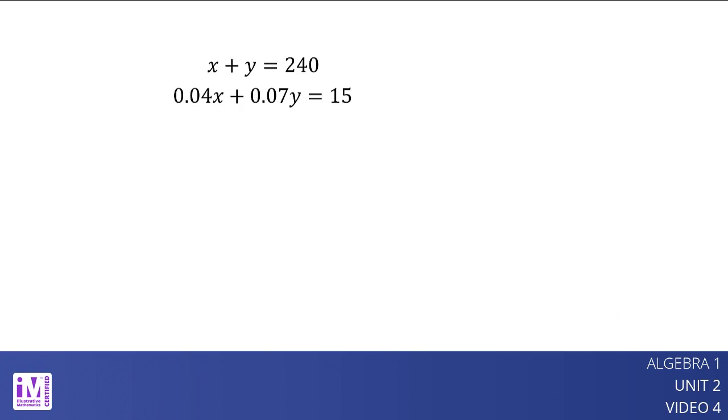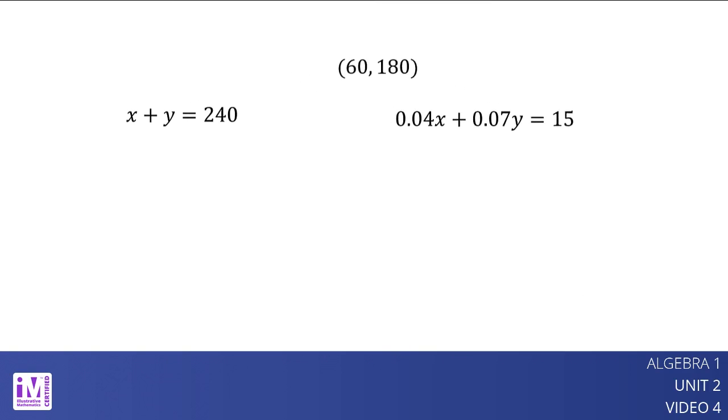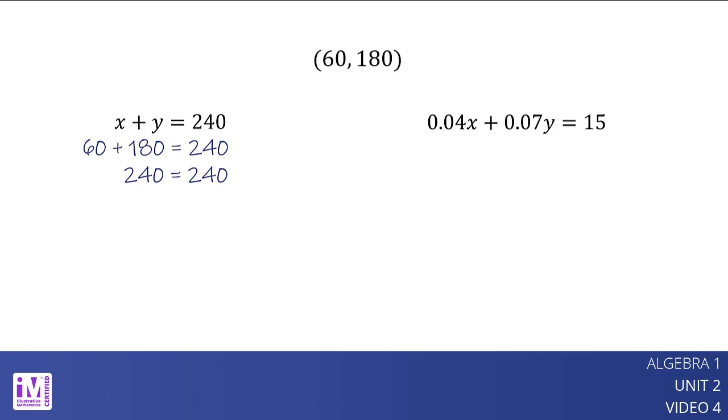Let's substitute 60 for x and 180 for y in each equation. We find that these values make the equations true. 60, 180 is a solution to both equations simultaneously.